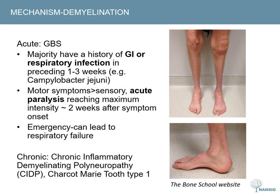Moving on to polyneuropathies where demyelination is the main underlying process. These are less common than the chronic axonal polyneuropathies. Guillain-Barré syndrome, or GBS, in its most common form is an acute demyelinating polyneuropathy. It typically develops within a couple of weeks following a GI or respiratory infection, with Campylobacter jejuni being one implicated organism. In contrast to the polyneuropathies discussed earlier, GBS is a predominantly motor polyneuropathy at onset and patients often present with weakness.